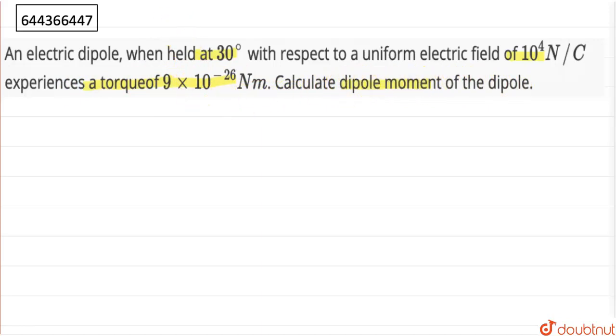So, we have to calculate the dipole moment. The situation is there is a uniform electric field and we have a dipole which is aligned at 30 degrees with the uniform electric field E.